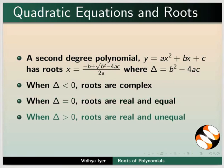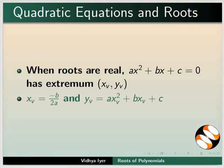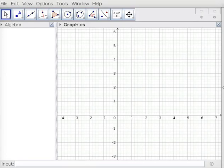When delta is greater than 0, roots are real and unequal. When roots are real, ax² plus bx plus c equals 0 has extremum (xv, yv), where xv equals minus b divided by 2a and yv equals axv² plus bxv plus c.